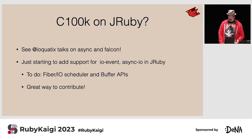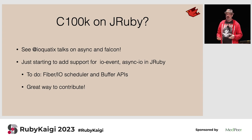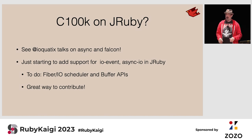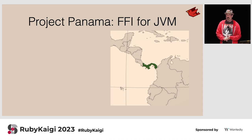This opens up all sorts of new possibilities. At past RubyKaigi, Samuel Iaquatics has presented his visions for C100k or C1M — being able to handle a hundred thousand sockets at the same time in a single Ruby process. We'll be able to support this now. I've already started adding the features needed to get async IO and the whole stack up to the Falcon server working on JRuby. This would be a great area for someone to contribute.